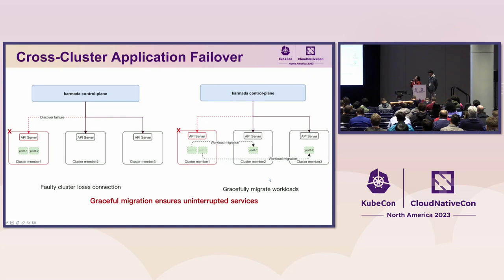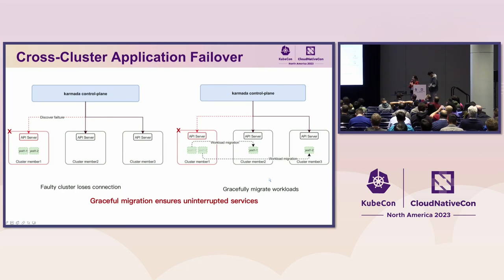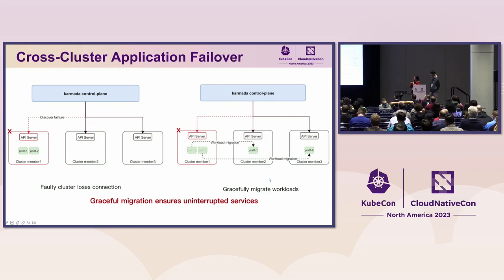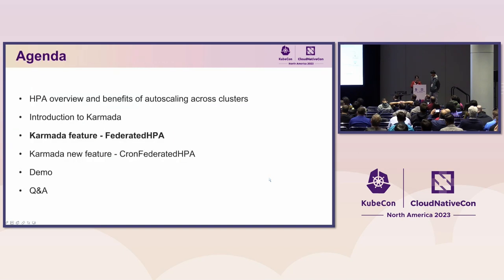Another scenario worth mentioning is cross-cluster application failover. There are three member clusters registered to the control plane. If one of them loses its API connection or becomes unavailable, it will be detected by the cluster controller with a discovery failure. The workloads on that member cluster will be automatically scheduled to the other available clusters, gracefully migrating to ensure uninterrupted service.